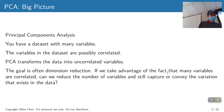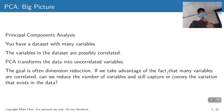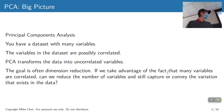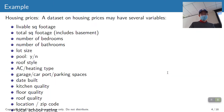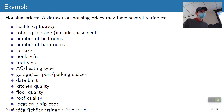Generally, your variables are going to be correlated, and what PCA does is transform the data into uncorrelated variables. The goal is dimension reduction — if we take advantage of the fact that many variables are correlated, can we reduce the number of variables and still capture the variation that exists in the data?